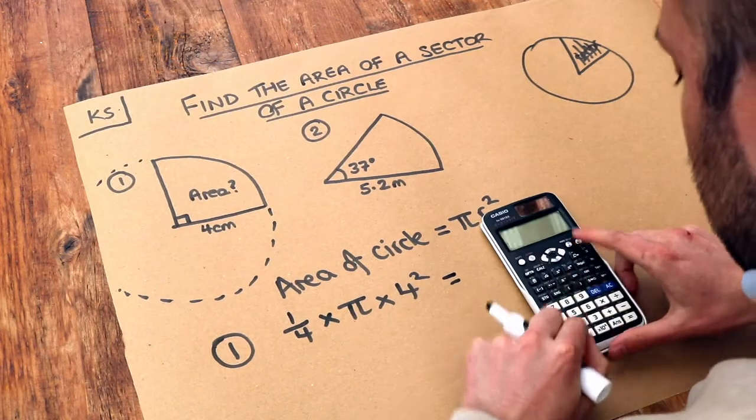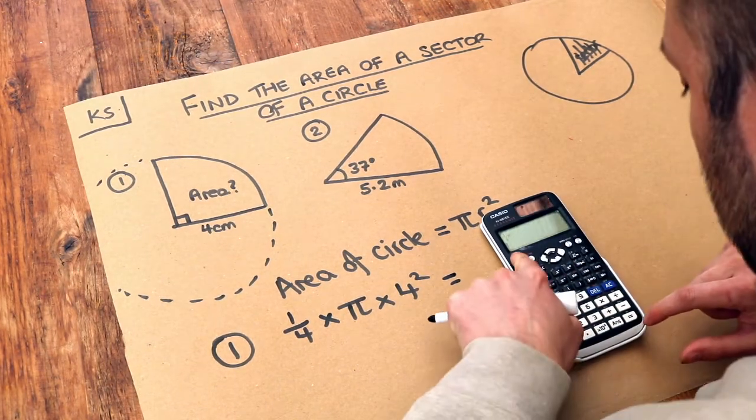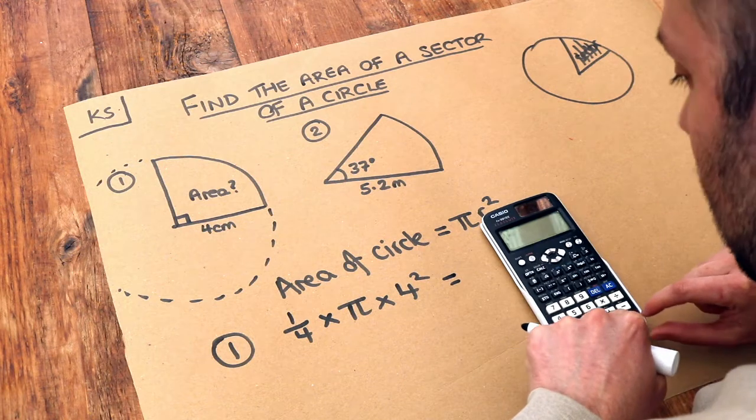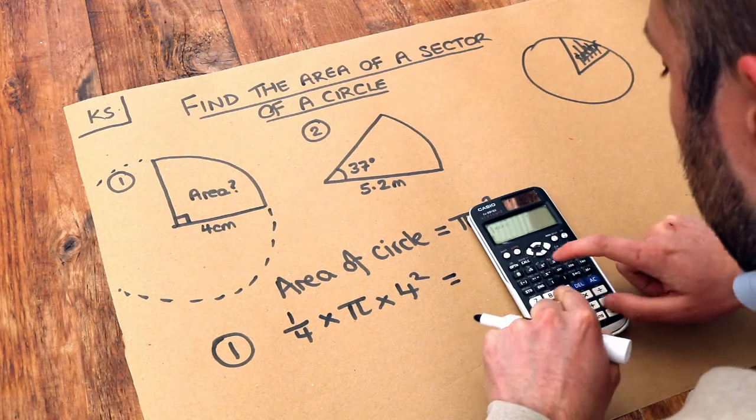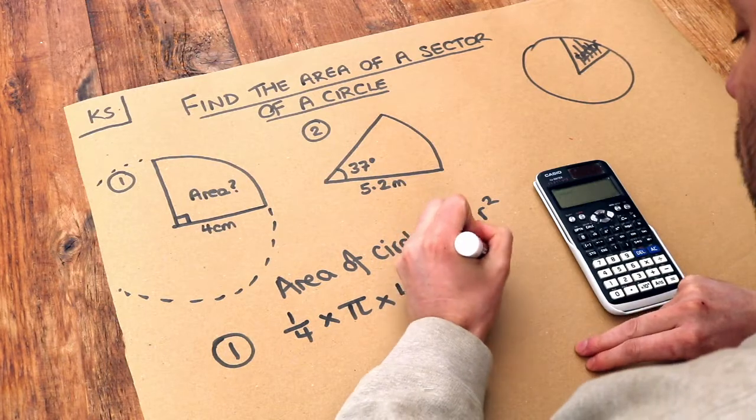And if we put that on our calculator, so a quarter times shift π, the π is at the bottom here on my calculator, times four squared. And my calculator said four π.